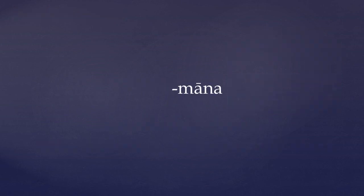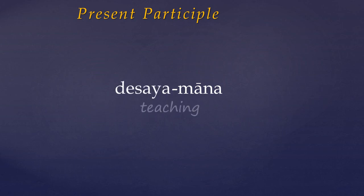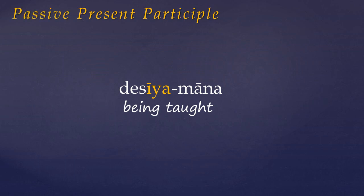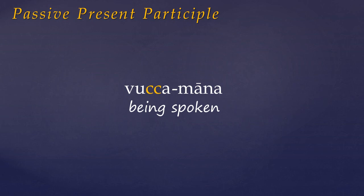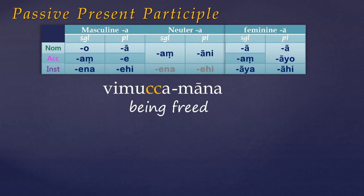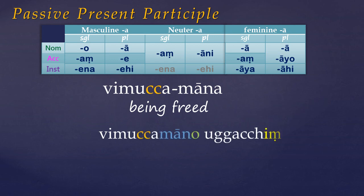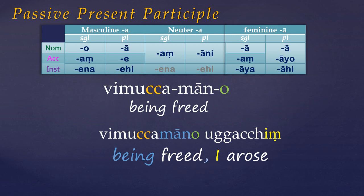And finally, we saw last week that one suffix used to create the present participle was MĀNA applied to the present stem. Well, this ending is actually far more commonly applied to passive stems, which results in a passive present participle. Now English doesn't have a passive present participle, but we can approximate the meaning by using a present progressive auxiliary verb, giving us 'being done' or 'while being done.' Being participles, these decline to agree with the subject in number, case and gender. For example: 'Vimuccamāna' — 'being freed'. And 'ugañchi' is the first person aorist, so: 'Being freed, I arose.'